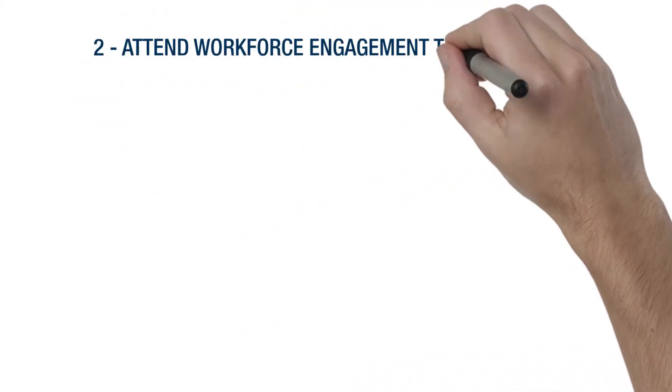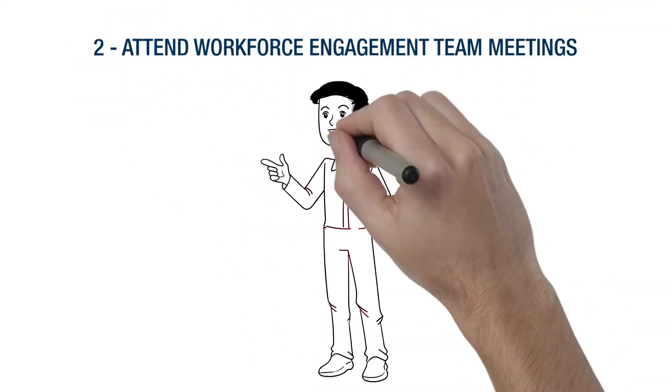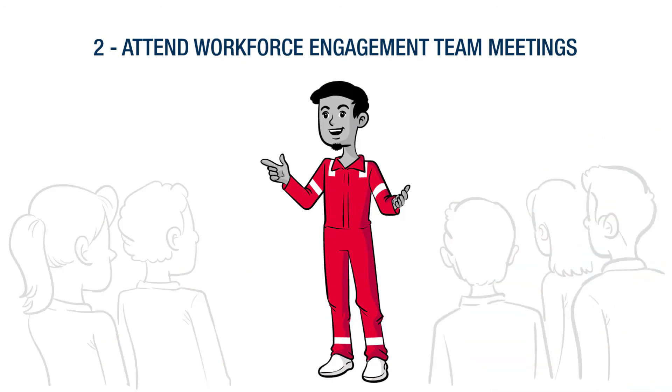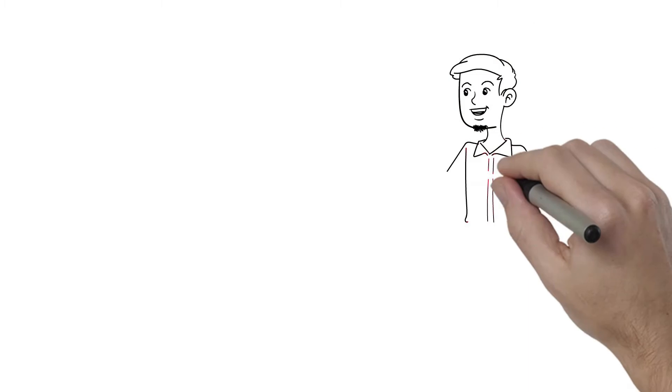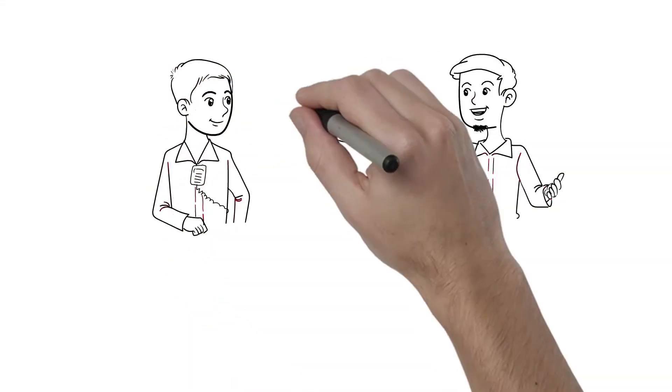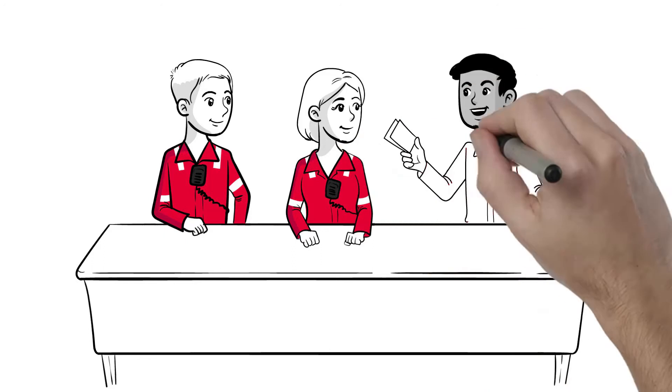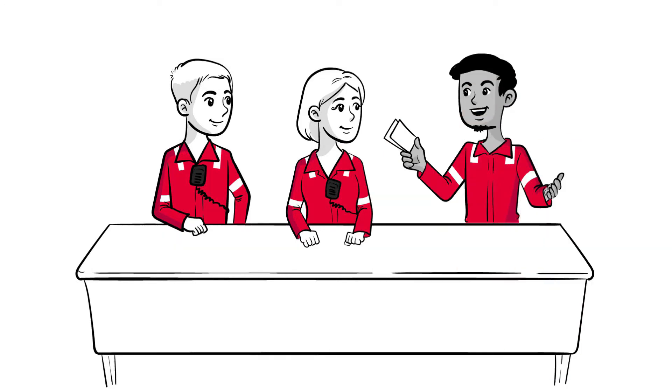The second role of a Workforce Engagement team member is to attend the Workforce Engagement team meeting. These are held about every two weeks. The Workforce Engagement team review the conversation cards that have been submitted and discuss any items the Workforce Engagement team members may have also captured or considered.